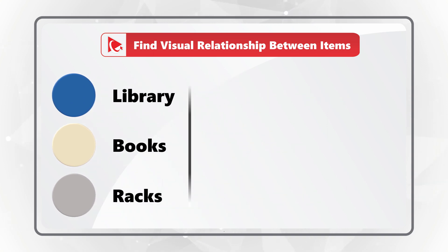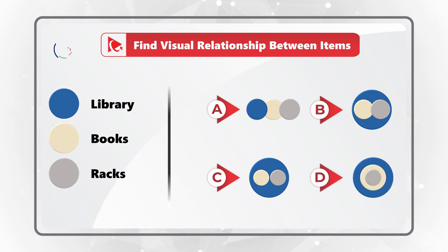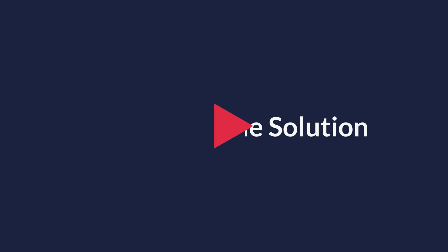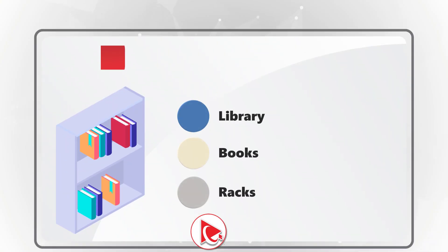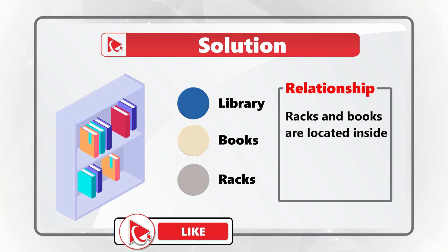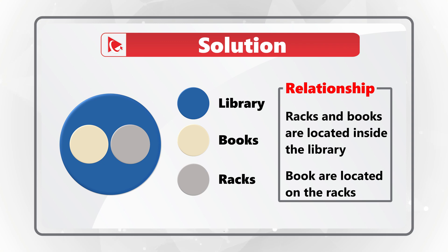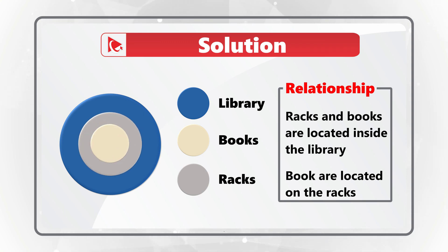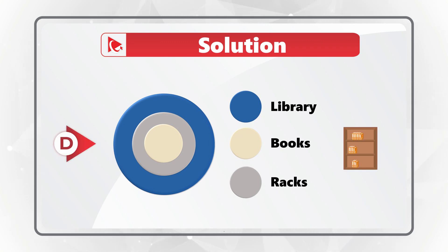You have four different choices — A, B, C, and D. Take a close look to see if you can come up with the answer. The way I see it is that books and racks are located inside the library, so yellow and gray circles should be inside the blue one. And books are also located on the racks, which means the gray circle should be inside the yellow circle. So the correct choice here is choice D. Do you see it differently? Please make sure to post in comments.